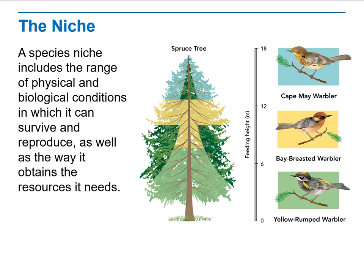A niche is a range of physical and biological conditions in which a specific animal can survive and reproduce. Within their niche, animals can obtain the resources they need to survive — water, food, and shelter. These are the things that must be present for an area to be called a niche.